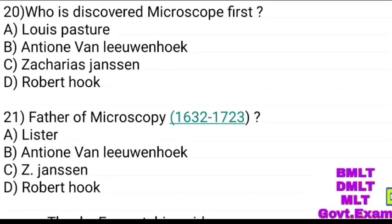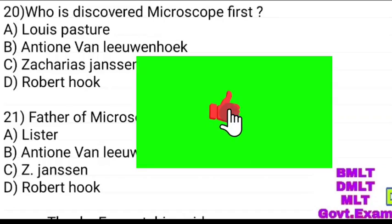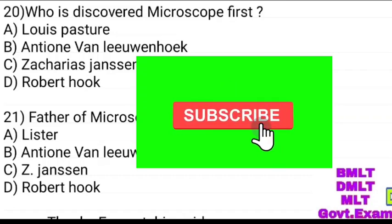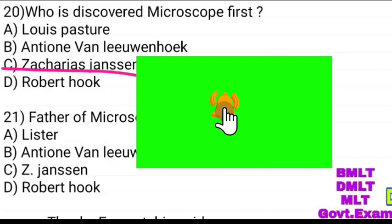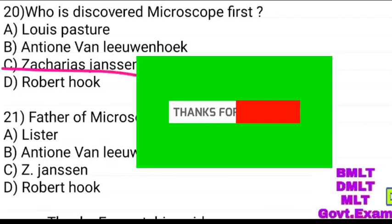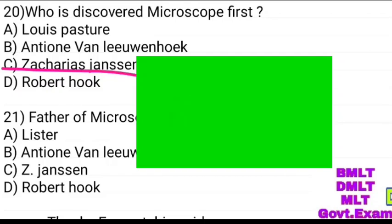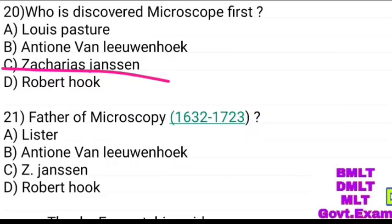Who discovered the microscope first? Options: Luis Fetcher, Anthony Leeuwenhoek, Richard Johnson, Robert Hooke. Answer: Robert Hooke. Father of Microscope: options Luis Fetcher, Anthony Leeuwenhoek, Robert Hooke. Answer: Anthony Leeuwenhoek.